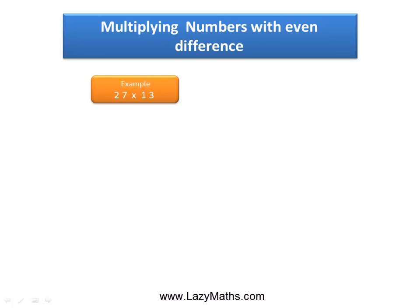Here's an example of multiplying numbers with an even difference, 27 and 13.